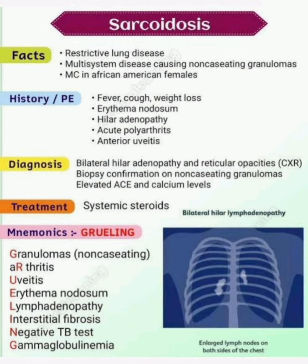Now the mnemonic for sarcoidosis, that is easy to remember: GRAULING. G for granulomas — non-caseating; A for arthritis; U for uveitis; E for erythema nodosum; L for lymphadenopathy; I for interstitial fibrosis; N for negative tuberculosis test; and G for gamma globulinemia. This is all about sarcoidosis.